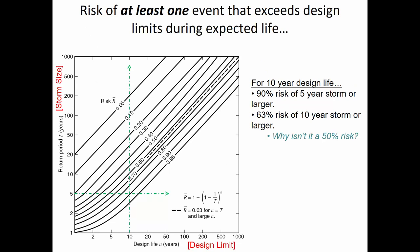Here's a figure from the text illustrating the cumulative risk of more than one storm over a design life. For a 10-year design life along the horizontal axis, if you take that up and intercept the 90% risk curve, there's a 90% risk of a 5-year return period storm or larger occurring during that 10-year design life. That's counterintuitive, because we'd usually think of just a 50% risk of a 10-year storm during five years — since in each year there's a 10% chance.